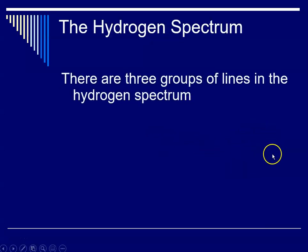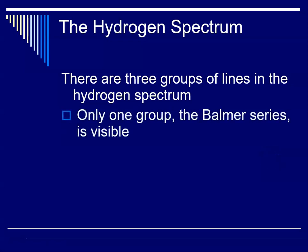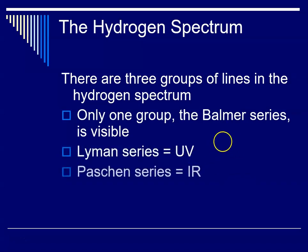So there's three groups of lines in the hydrogen spectrum, know them, you are responsible to know them. So only one of them is visible, and that's the Balmer series. The Lyman series is in the ultraviolet region, and the Paschen series is in the infrared region. Again, only visible ones are the Balmer.